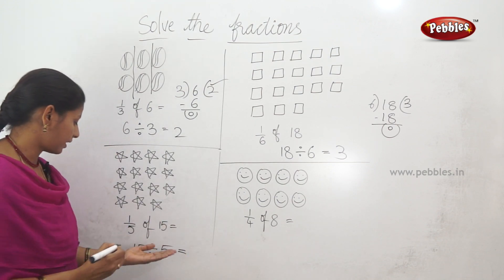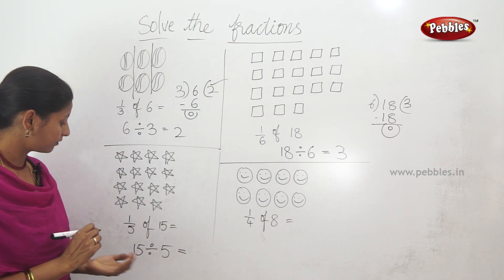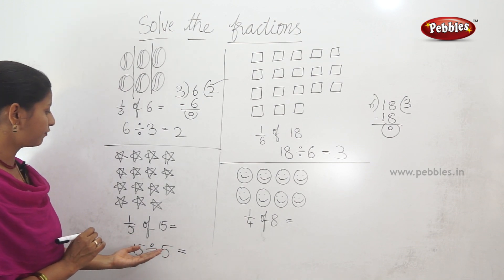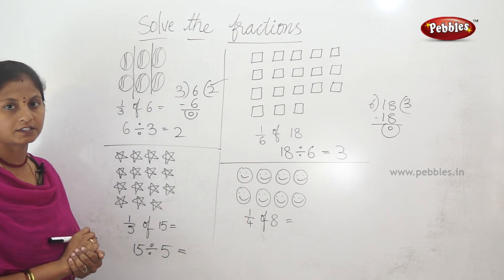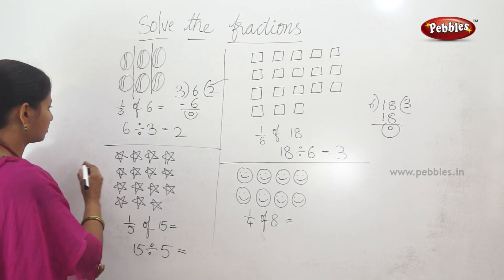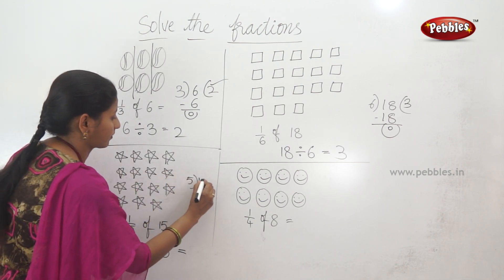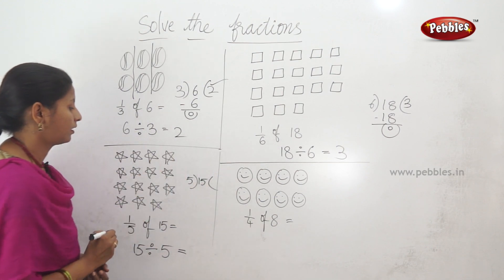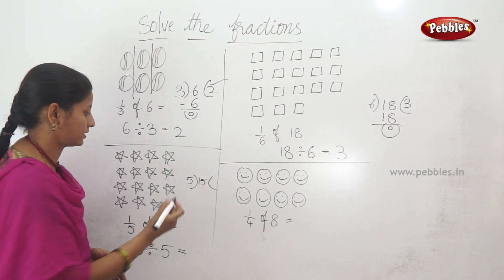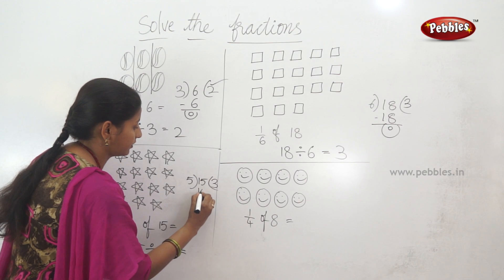15 divided by 5. 15 is divided into 5 equal parts. Let's do the division: 5 times 1 is 5, 5 times 2 is 10, 5 times 3 is 15.